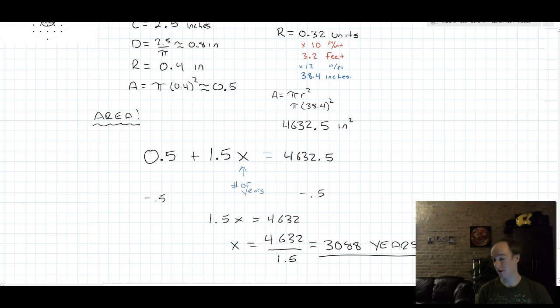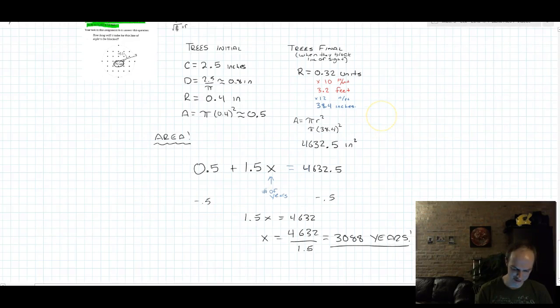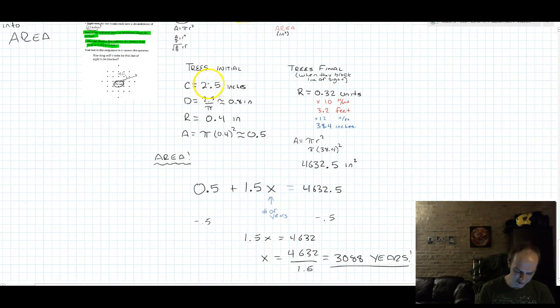You may be surprised at this number. It's a pretty big number. That's a lot of years. But let's think about these trees for a second. Right now they're 2.5 inches circumference, they're a half inch radius. That's tiny. These are very small trees.